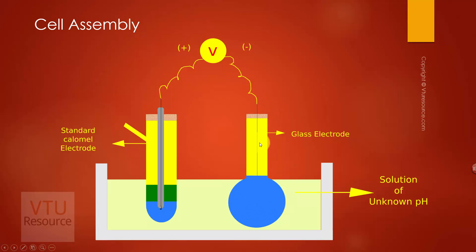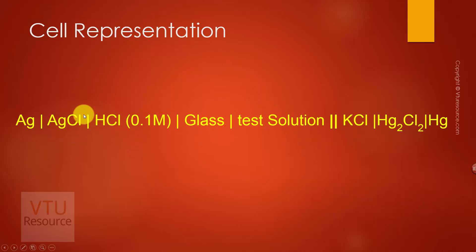The glass electrode acts as the anode and the saturated calomel electrode acts as the cathode. The cell can be represented as Ag|AgCl (internal reference electrode), 0.1 molar HCl (internal reference solution), glass membrane, and test solution. This entire glass electrode is coupled with the calomel electrode through a salt bridge.